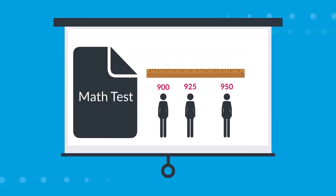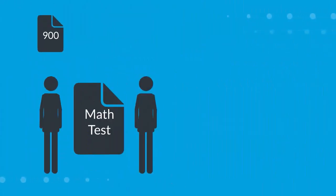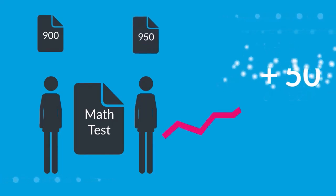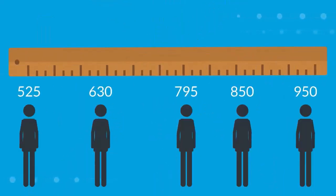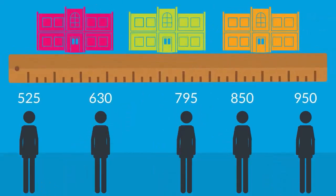Of course, math would not be on the same scale as reading because they measure different things. For example, a student with a scale score of 900 in fourth grade and a scale score of 950 in fifth grade showed 50 points of growth. When students participate in the same testing program where a single scale is used to measure everyone, scale scores can also be used to compare students from different classes and schools.